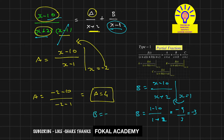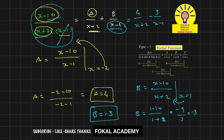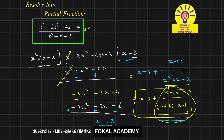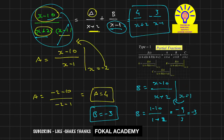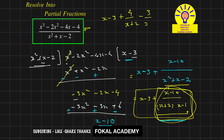Substituting A equals 4 and B equals minus 3 back into the expression, the complete partial fraction decomposition is: x minus 3 plus 4 divided by (x plus 2) minus 3 divided by (x minus 1). This is the required partial fractions result for the given problem.